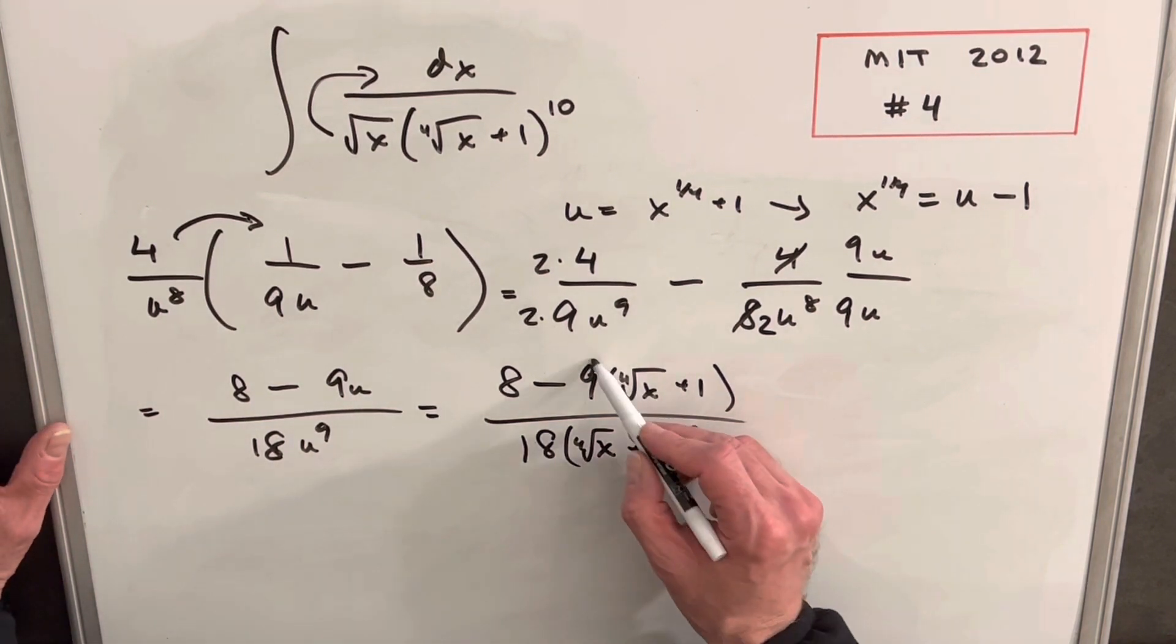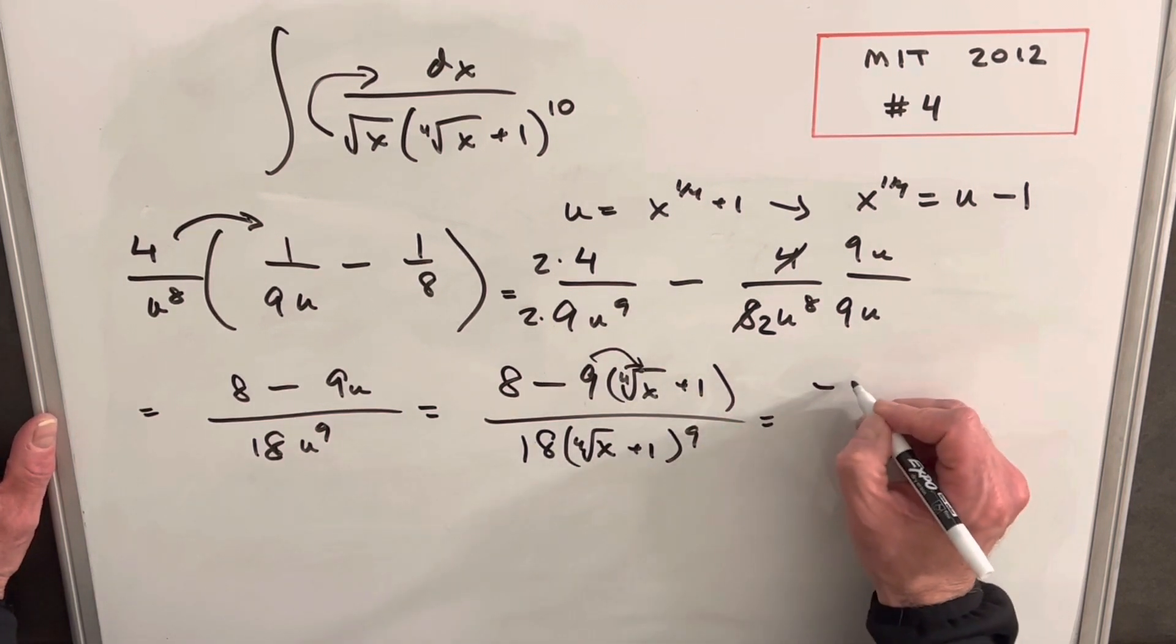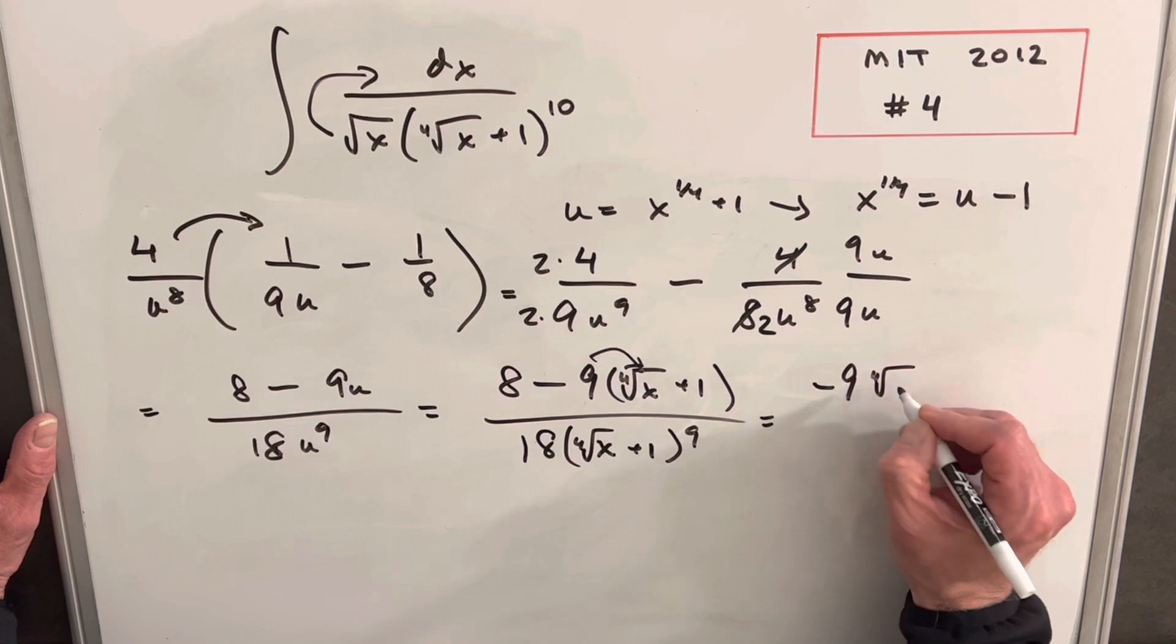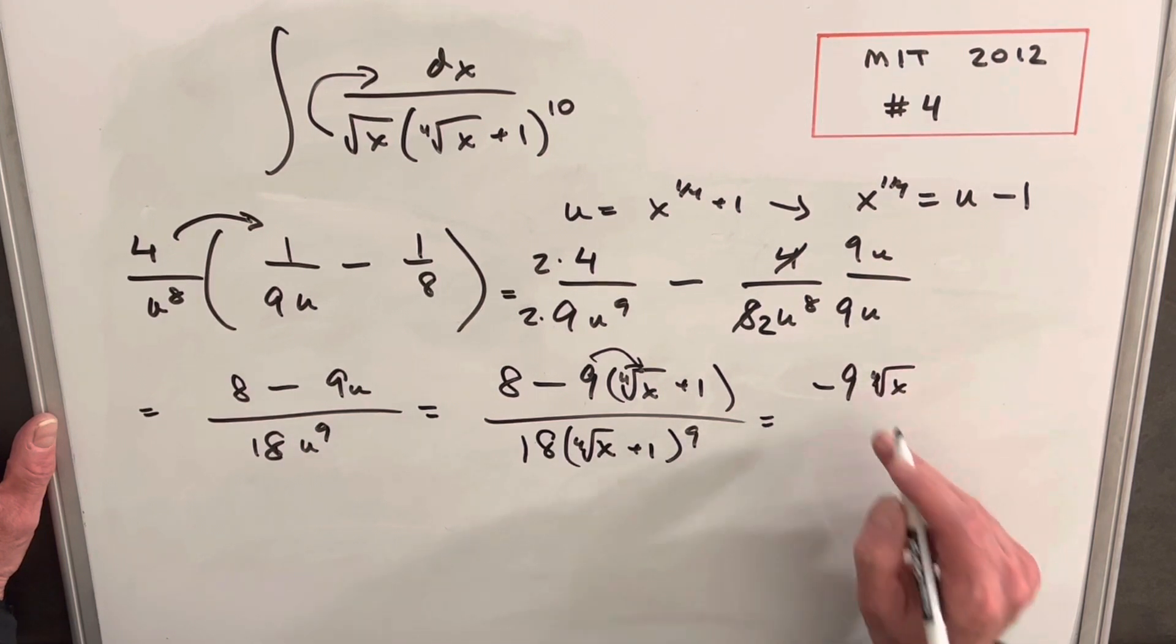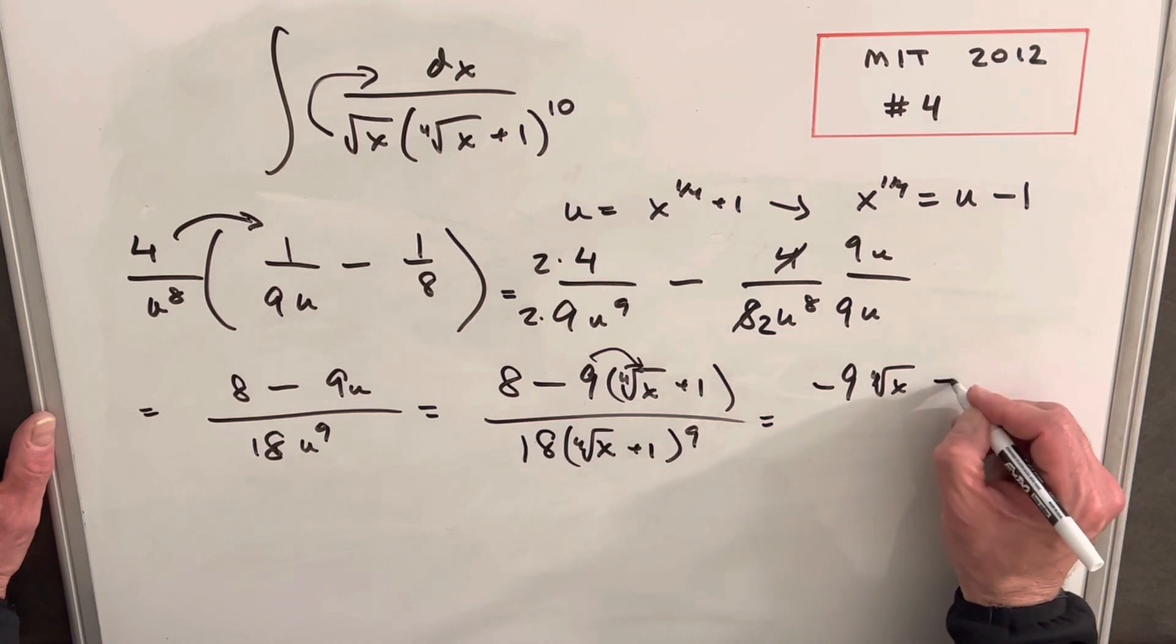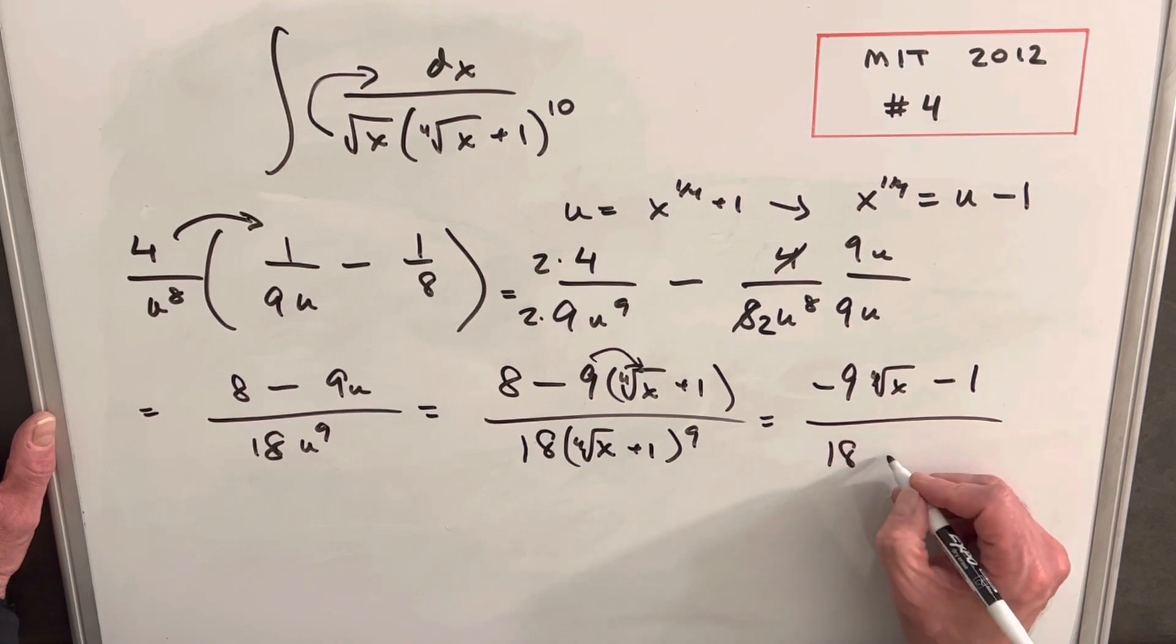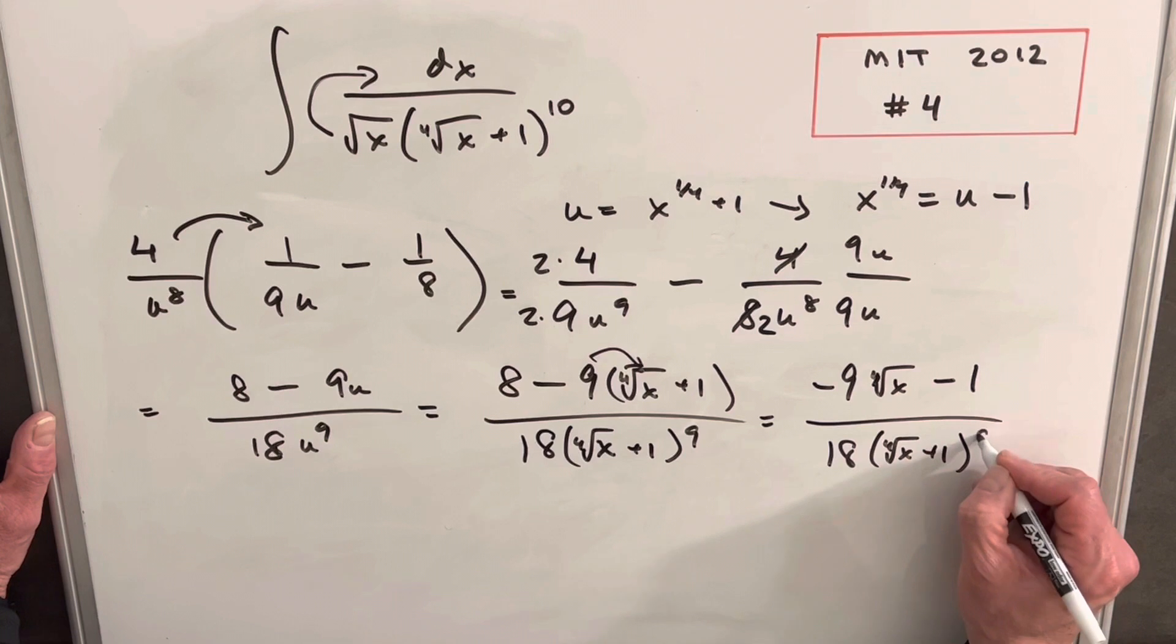And then I think the last step, we'll just multiply in this nine. So we're going to end up with minus nine times fourth root of x. We'll have a minus nine here plus an eight is going to be a minus one. All over 18, fourth root of x plus one to the ninth.